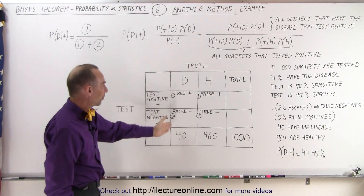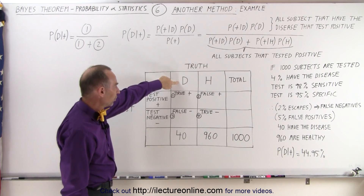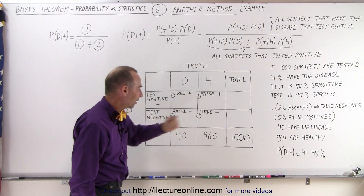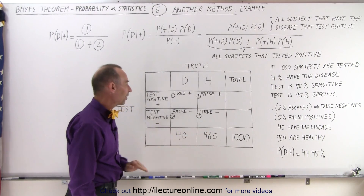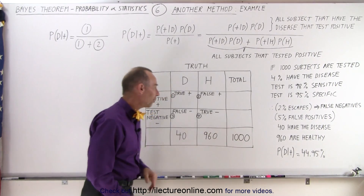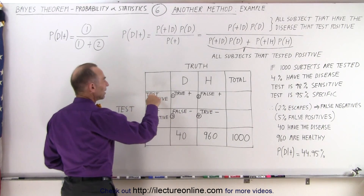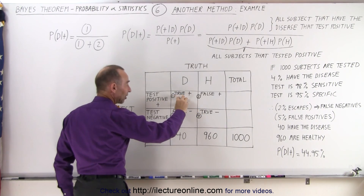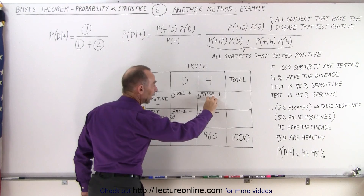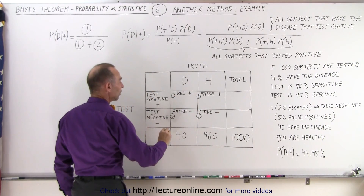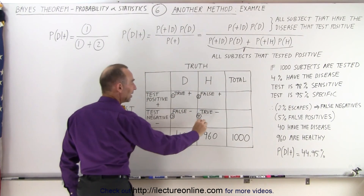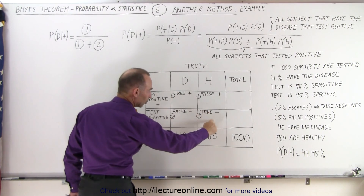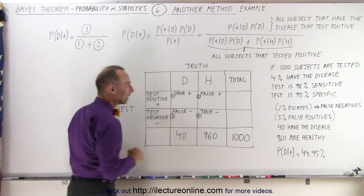In the vertical columns we have what we call the disease column. These are the ones that actually have the disease, and these are the ones that are healthy — 40 have the disease, 960 are healthy, for a total of 1000 subjects. In the horizontal columns we have the positives: the ones that test positive, the ones that have the disease and test positive, and the ones that are healthy and test positive. We also have the ones that have the disease but test negative, and the ones that are healthy and test negative. That's why we call these true positives and true negatives, and these are false positives and false negatives.